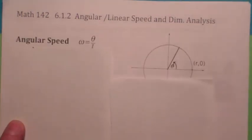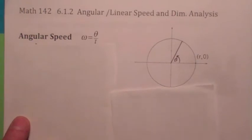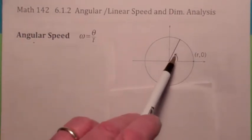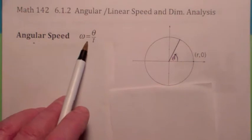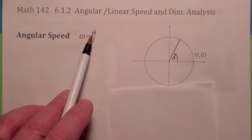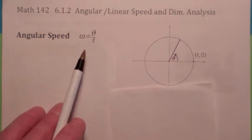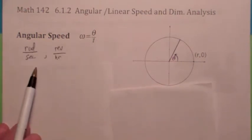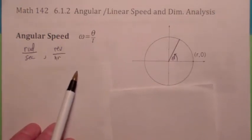Angular speed — let's look at it like this. Suppose you have a wheel that's spinning. This is the central angle theta. The angular speed, omega, is a measure of how fast that central angle is changing with respect to time. The units might be radians per second or revolutions per hour.